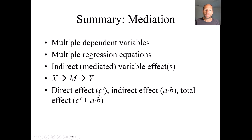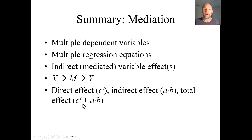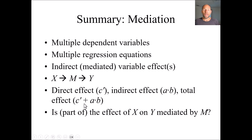In such a model we have a direct effect c', and one or more indirect effects. In our example with only one mediator, there is one indirect effect: a times b. If you had multiple mediators — which is totally possible — there would be more different kinds of indirect effects, and those could be products of more than two regression coefficients if there are multiple mediators in the chain from x to y. We can also define a total effect, which is the sum of c' plus all indirect effects. In our example, the total effect would be c' plus a times b. The question addressed by a mediation model is whether part or the full effect of x on y is mediated by m — does m explain the association between x and y?